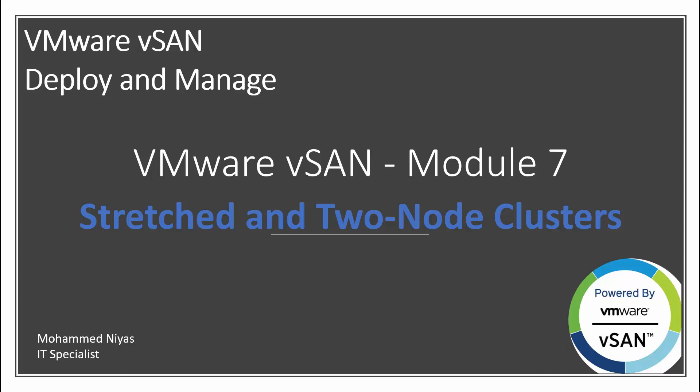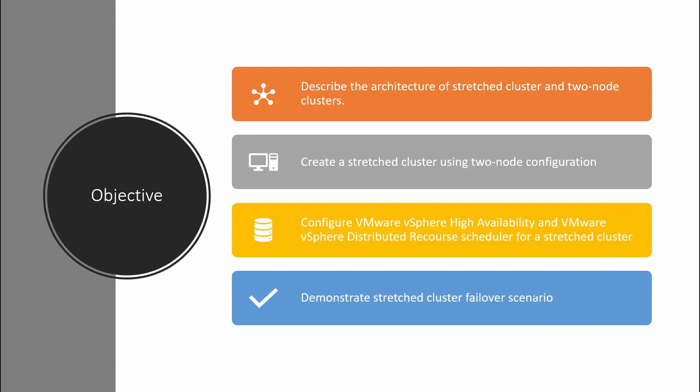Welcome to VMware vSAN Deploy and Manage Module 7. In this module we are going to discuss stretched clusters and 2-node clusters. The main objective is to describe the architecture of a stretched cluster and 2-node cluster, and demonstrate how to create them. We will also configure VMware vSphere High Availability and Distributed Resource Scheduler for the stretched cluster, and demonstrate stretched cluster failover scenarios.